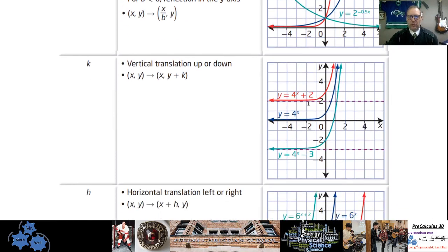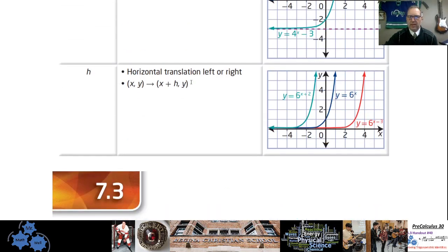And of course, easy peasy here, vertical translation. If you have a k value, that's right here. This is the one that's outside of the function here. It just raises it up or down. And the h value here, that would be the addition or subtraction of something up in the exponent position with the x. That's what moves it left or right. And of course, the signs are opposite. If it's y equals 6 to the power of x plus 2, that means that y equals 6 to the power of x gets shifted to the left 2 units. And then if it's minus 3 like this, it would be shifted to the right 3 units.